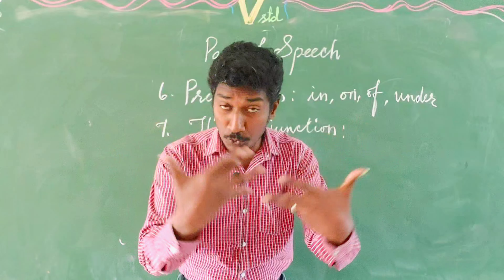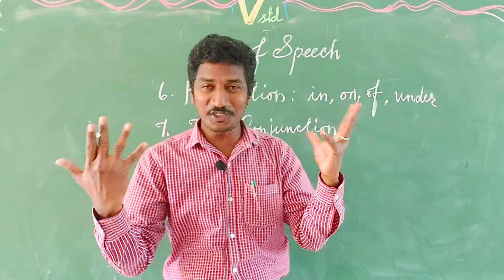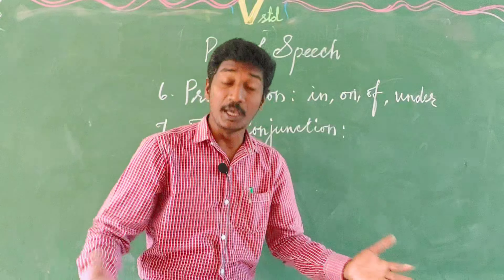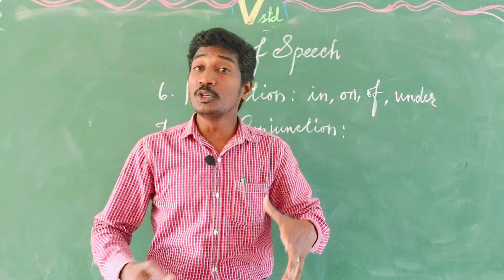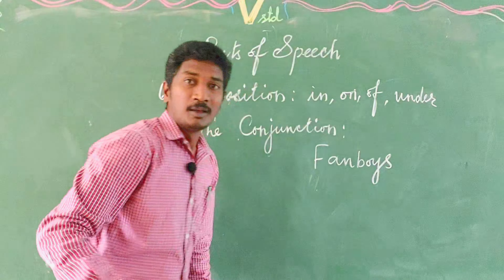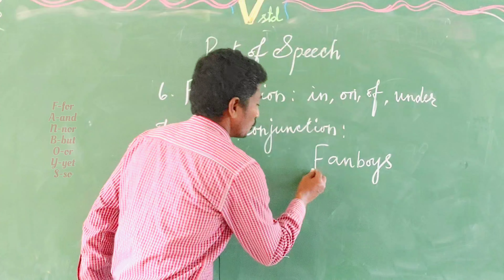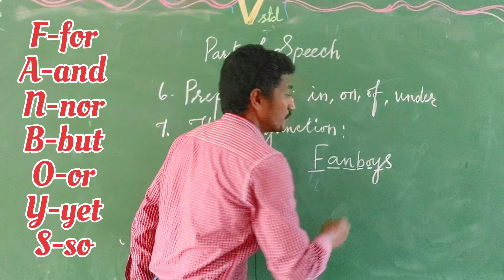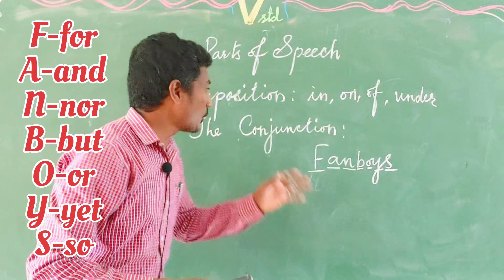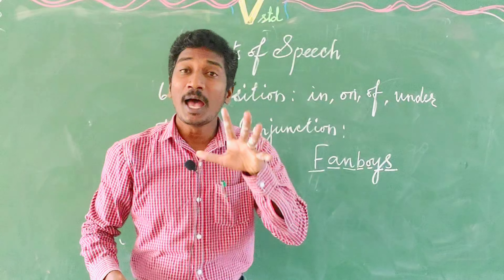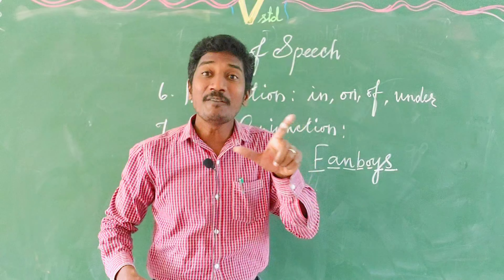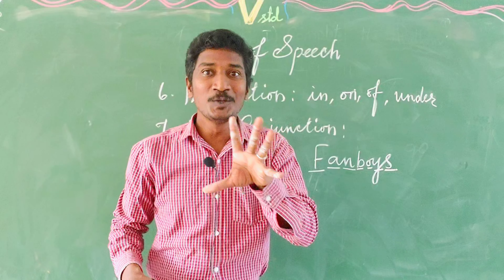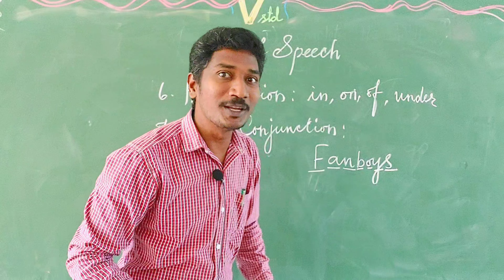Let's move on to Conjunction. Conjunction is a word which connects two words, two phrases, or two sentences. To remember them easily, look at the acronym FANBOYS: F for 'for,' A for 'and,' N for 'nor,' B for 'but,' O for 'or,' Y for 'yet,' S for 'so.' For example: 'I have a pen and a pencil.' 'I like tea but my brother likes coffee.' Conjunction connects two words or two sentences.